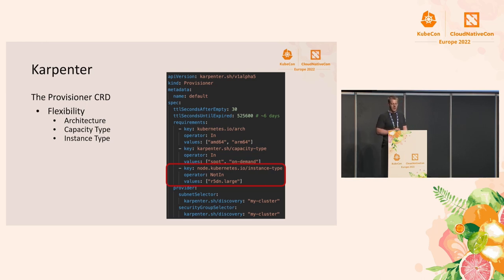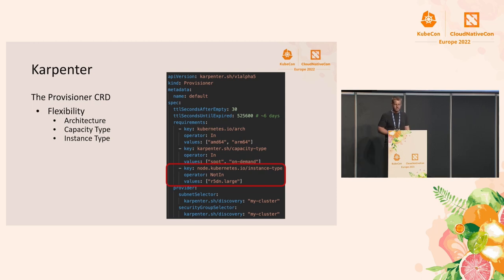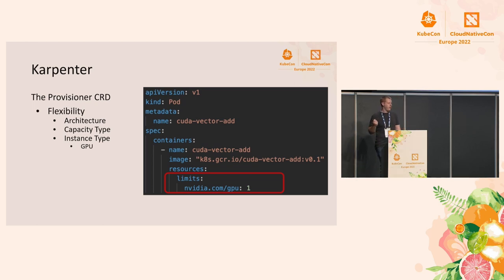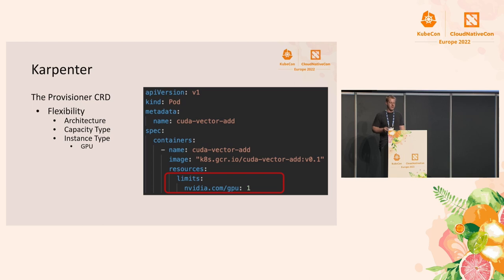Another interesting scheduling constraint is with GPUs or extended resources more generally. In this pod spec, you do a resource request for nvidia.com/gpu. Karpenter knows how to look at your GPU resource requests, query your cloud provider for nodes that support an NVIDIA GPU, and then provision that instance for this pod.